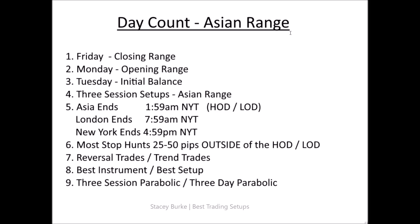Most stop hunts are 25 to 50 pips outside of the high or low daily range. That means sometimes Asia puts in a range, London opens and extends that range 25 to 50 pips outside in reverse, setting up for a U.S. session parabolic move through the high of the day or a continuation trade in that reversal direction. This can set up in any session — Asia, London, or New York — for reversal or trend trades.